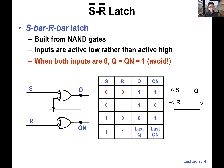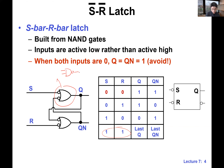We hold when both S and R are ones — that's the hold condition for the S-bar R-bar latch. Since the bubble is on the input side, we're looking at a NAND gate. When both of those gates degenerate to inverters, that's where we have this bistable element. So when both S and R are one, we have hold. This is the entire truth table for the S-bar R-bar latch.